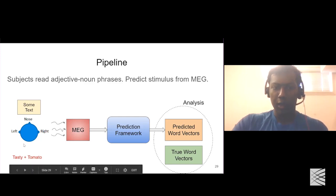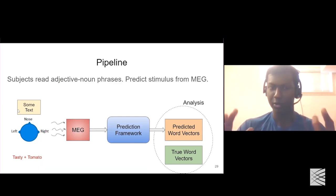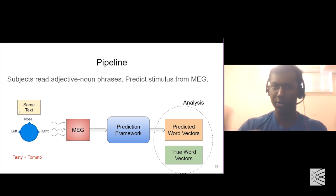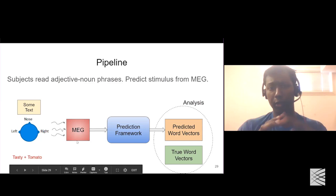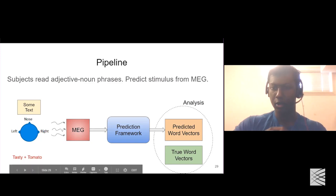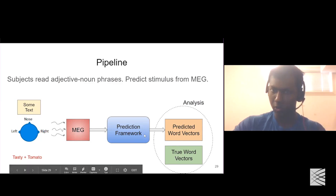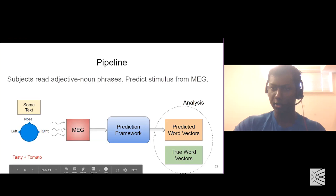Here's the full pipeline from data collection through analysis. On the left, a participant looks at raw words like 'tasty' and 'tomato' — they don't see the word vectors, which are only for the machine learning model. We then collect the MEG brain data, feed it into the prediction framework, and obtain predicted word vectors alongside the true word vectors. The true word vectors are separate during testing, and the two-versus-two test is performed at the analysis stage.